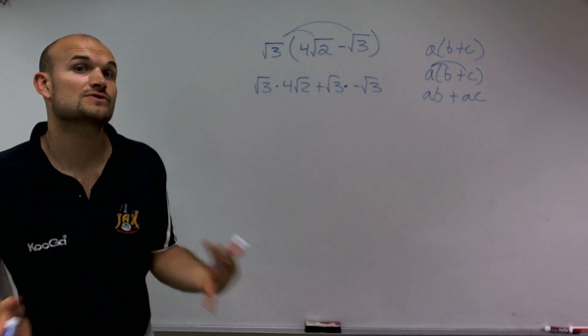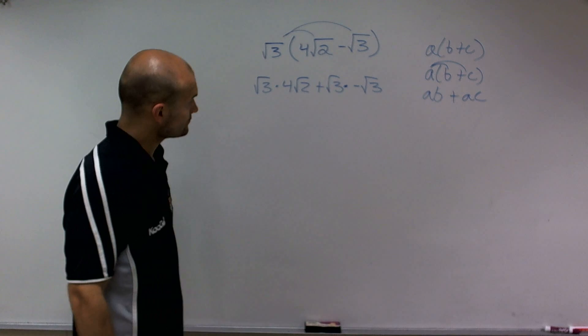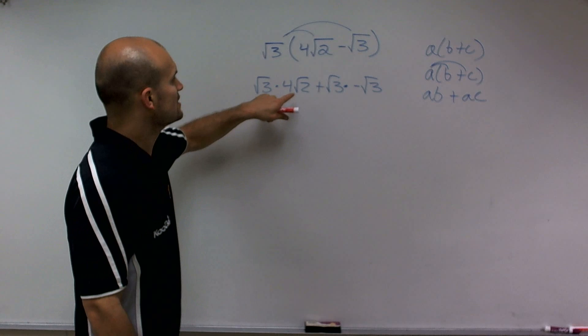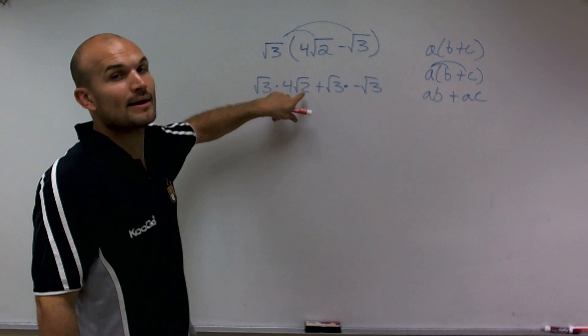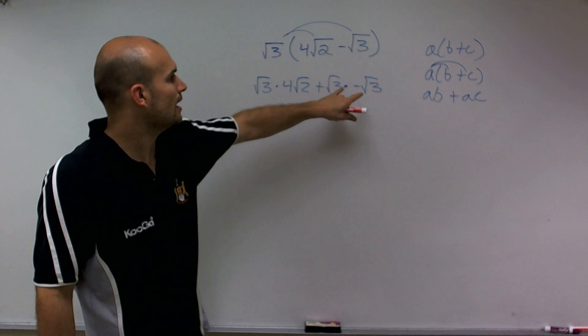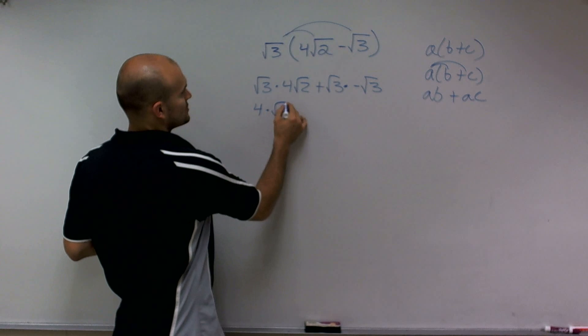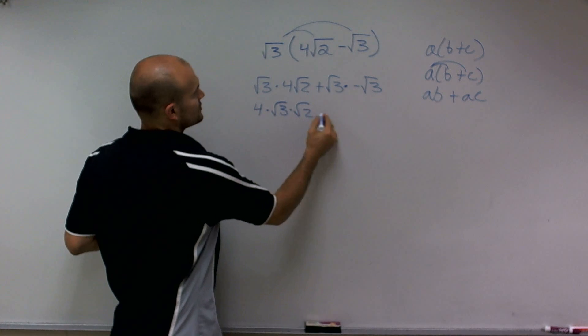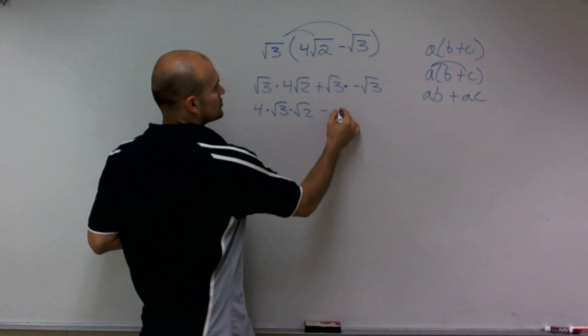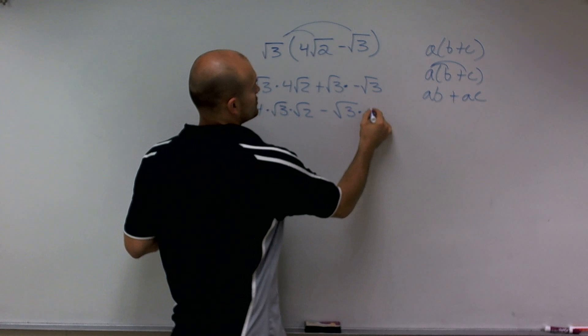Now what I'm going to do is use a little bit of associative property to rearrange these so I can multiply my radicals by each other. So therefore I'm going to rearrange this to 4 times square root of 3 times square root of 2 minus the square root of 3 times square root of 3.